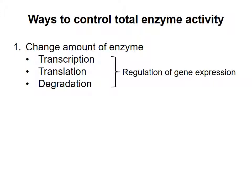Cells, particularly eukaryotic cells, can also regulate enzyme activity by controlling the location of the enzyme. Enzymes may be moved from one compartment in the cell to another, thereby separating or uniting them with their substrates.